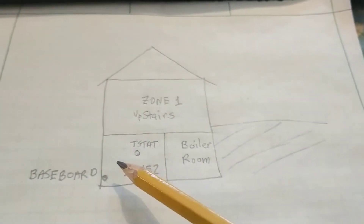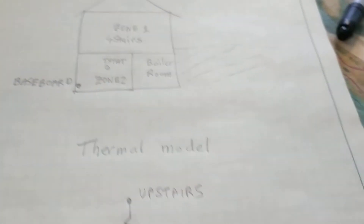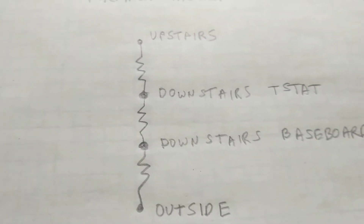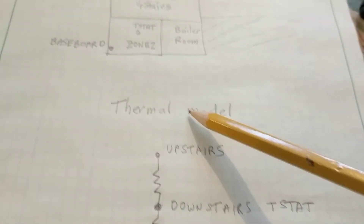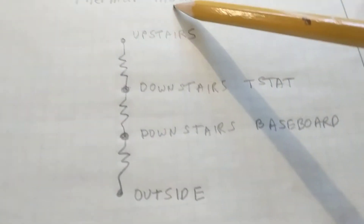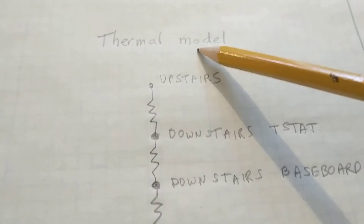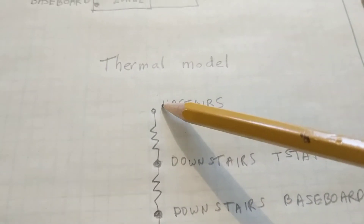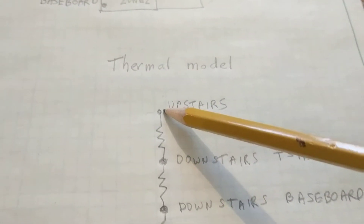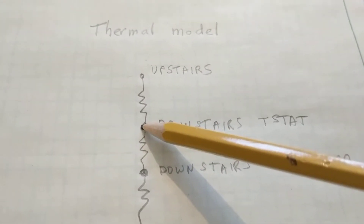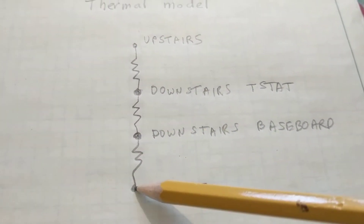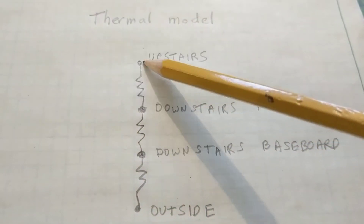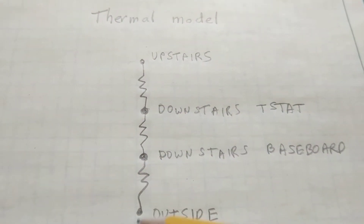This is now an engineering analysis. The thermal model we're putting together includes the upstairs thermostat, the downstairs thermostat, the downstairs baseboard, and the outside — all at different temperatures naturally.